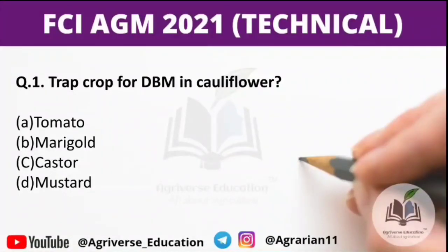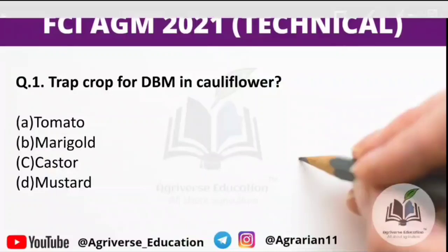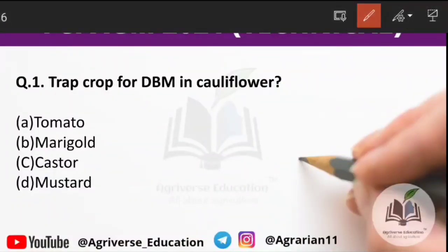Trap crop for DBM in cauliflower — DBM is Diamond Black Moth, which is a pest of cauliflower. We use trap crops for its management. Options are Tomato, Marigold, Castor, or Mustard. The right answer is Marigold. So, Marigold is used as a trap crop for DBM in cauliflower.